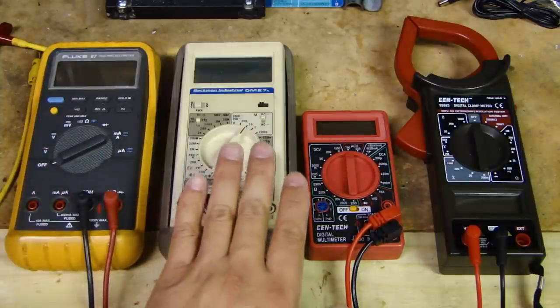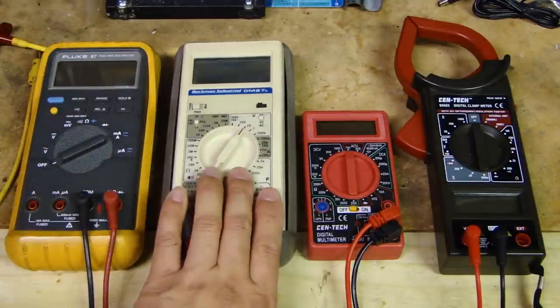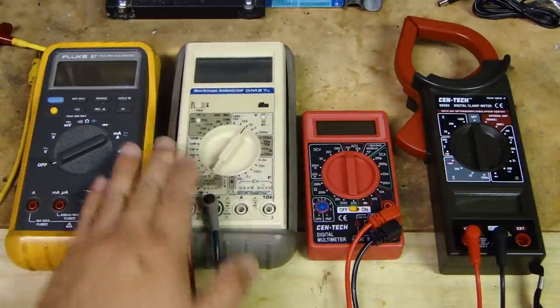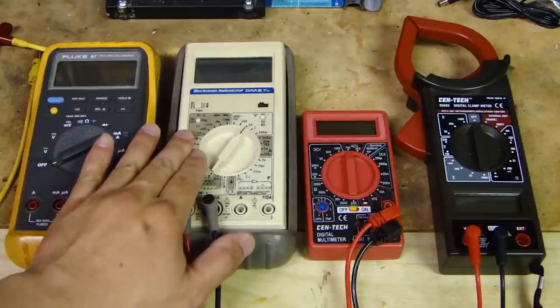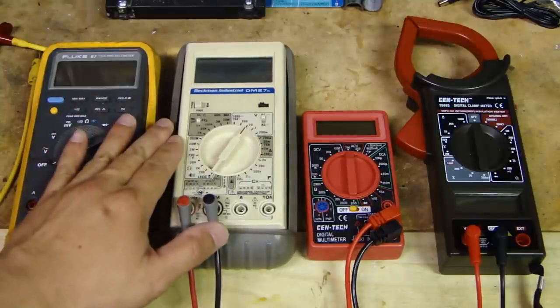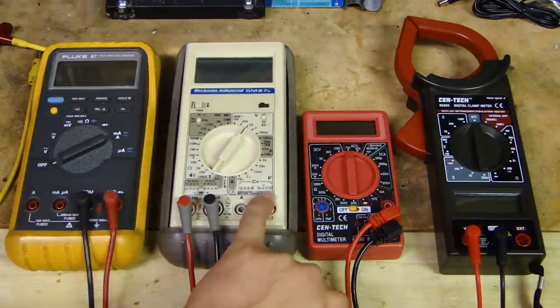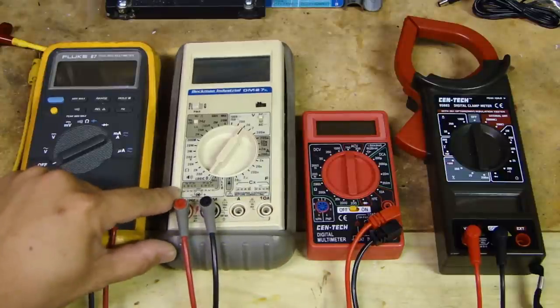And over here is a Beckman multimeter. I bought this when I was in college. And this one does your basic volt ohm amp measurement. But it does also have measurement for capacitors and also transistors.